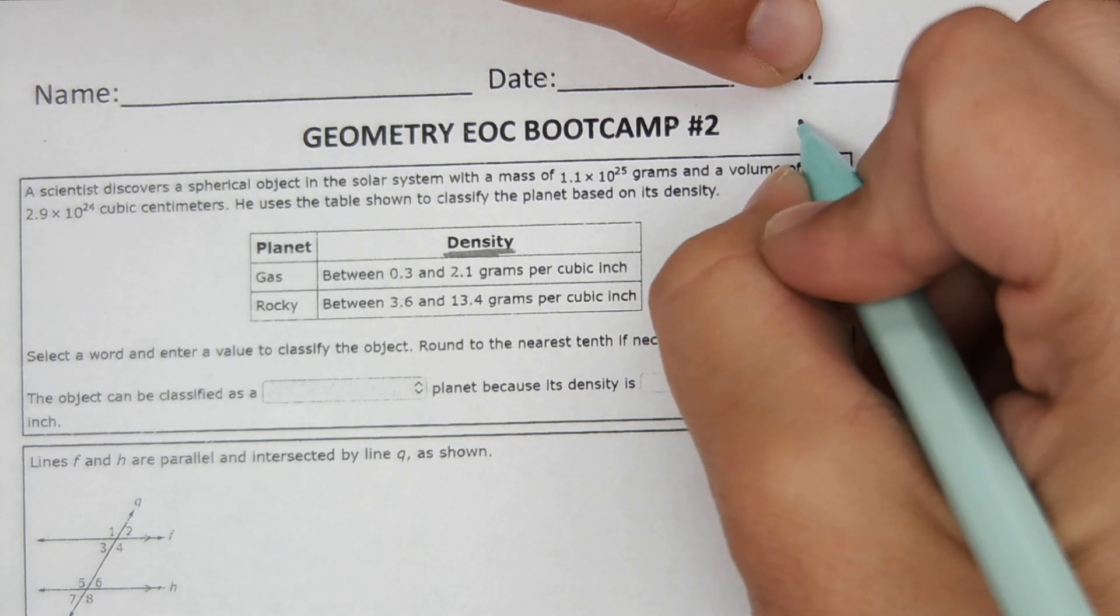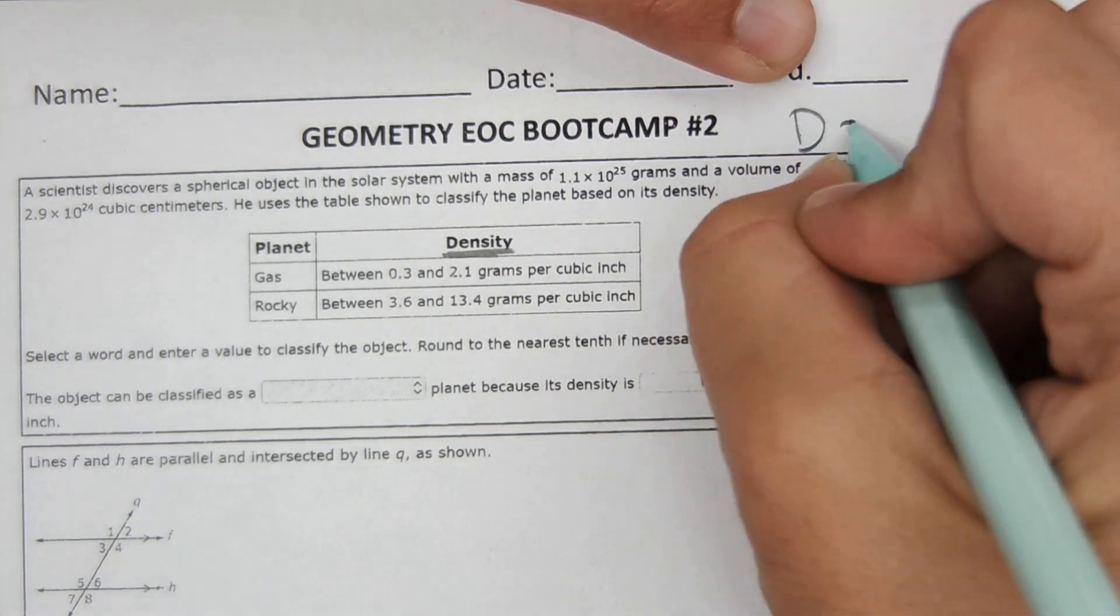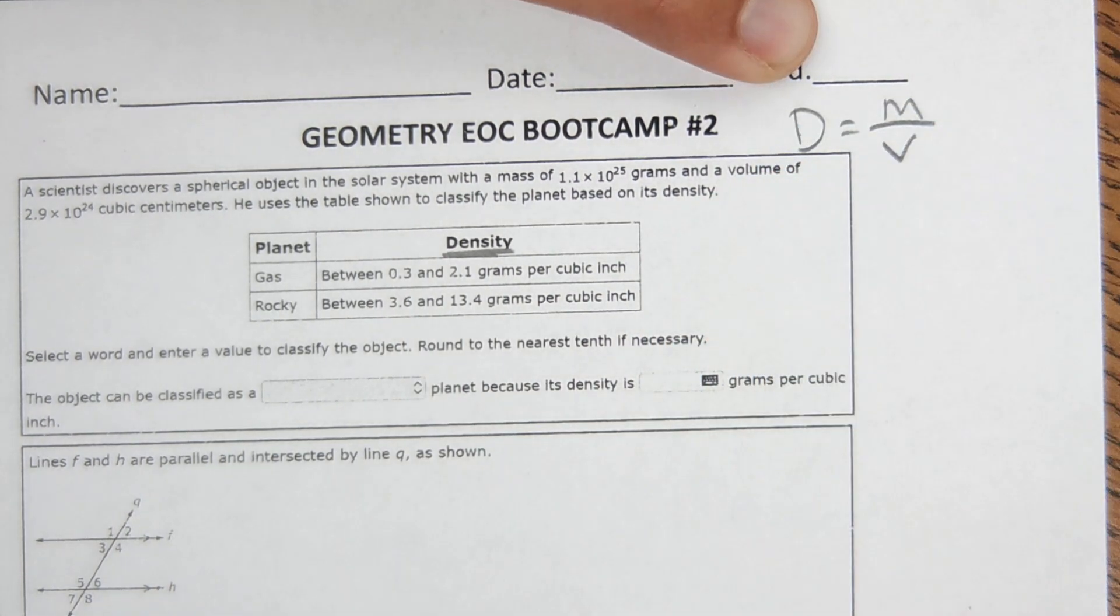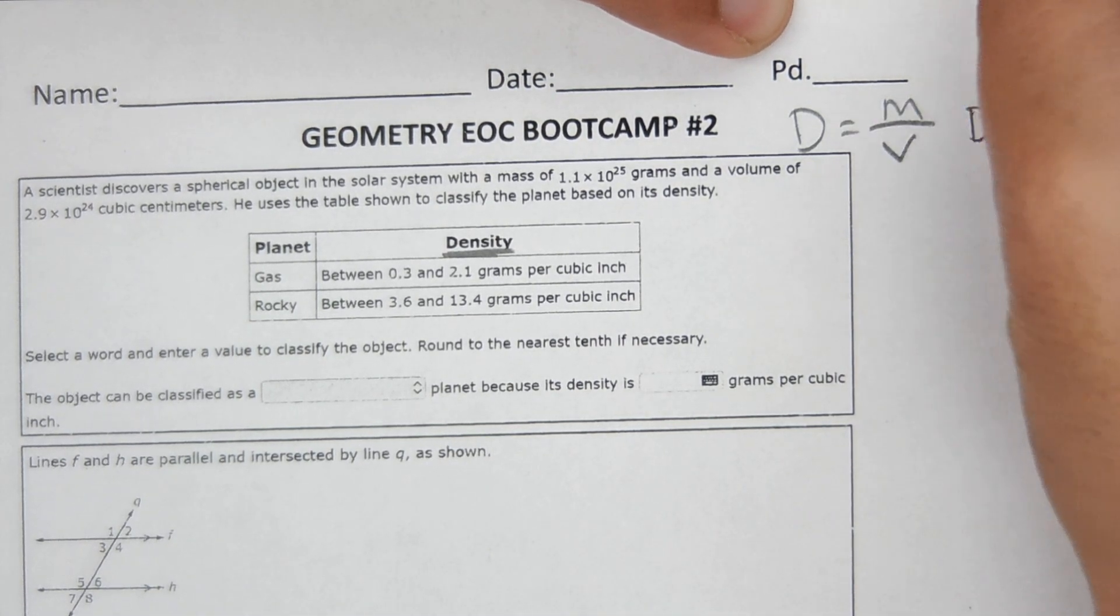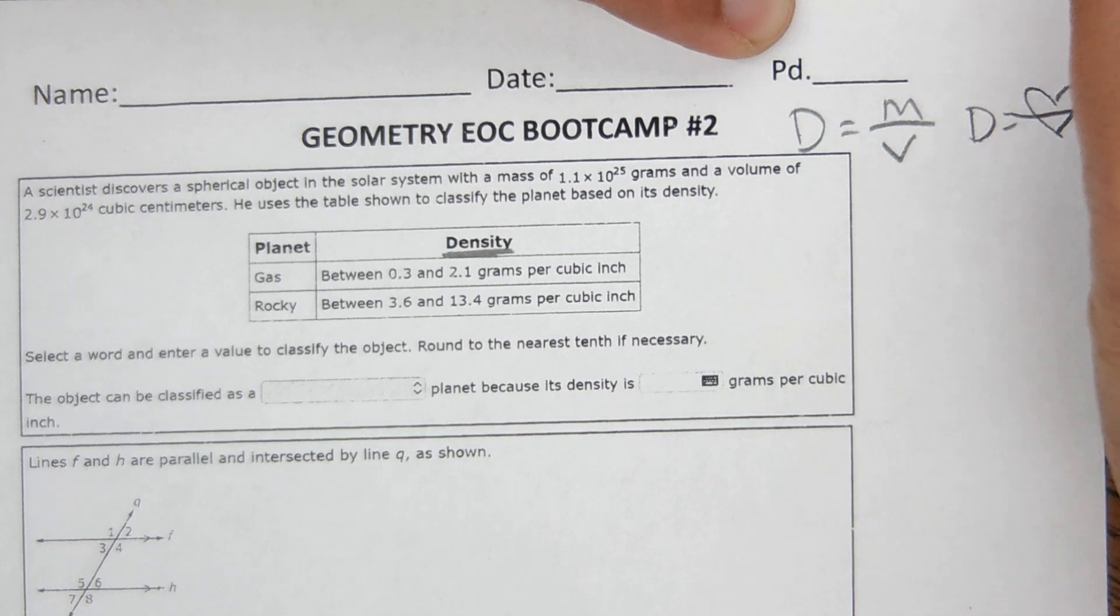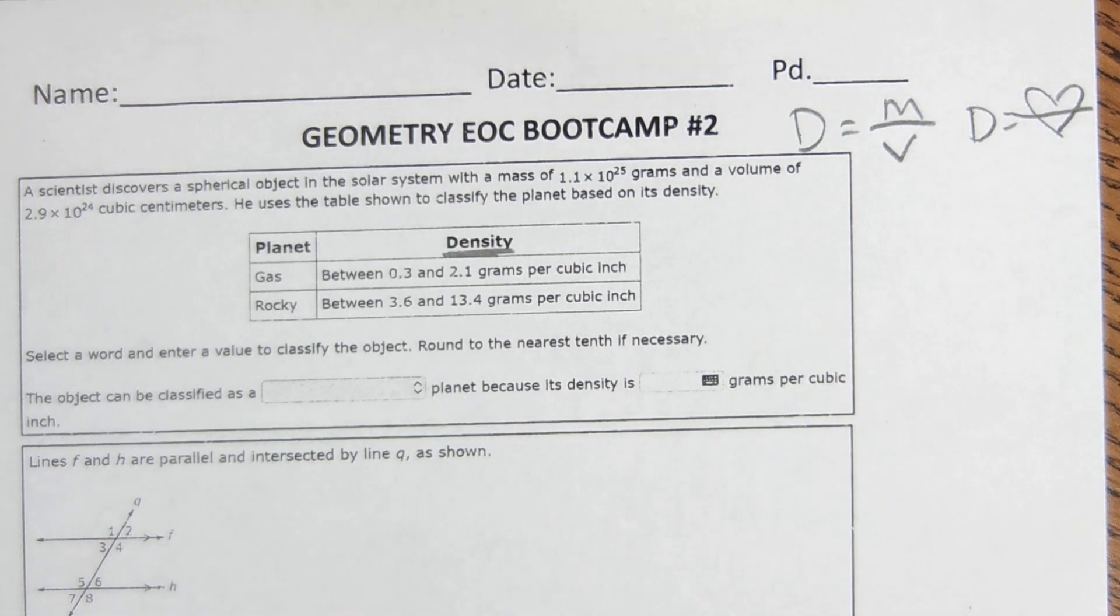The equation for density, which you may have memorized, density equals mass over volume. Does that ring a bell? So if you have trouble remembering that equation, the way to remember it is it's like a heart, mass over volume, and that's how you set up the equation.